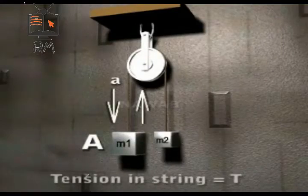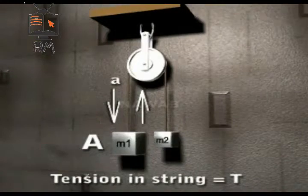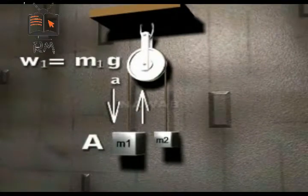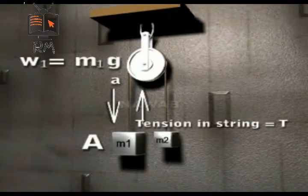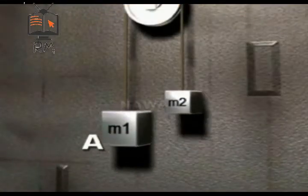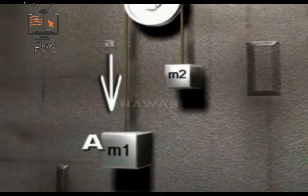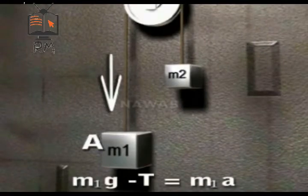Let's find out the values of acceleration A of the bodies and the tension T in the string. Two forces are acting on body A: (1) its weight W1 = M1G acting downward, and (2) tension T acting upward. As body A is moving downward, the resultant force acting on it is downward, due to which acceleration A is produced in it. Hence, M1G − T = M1A.